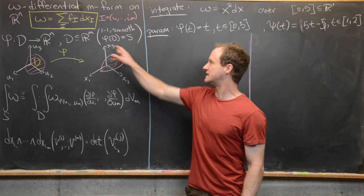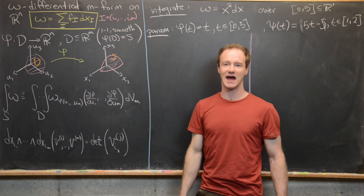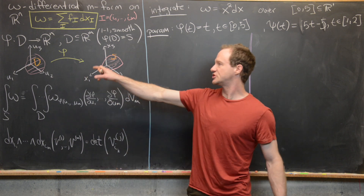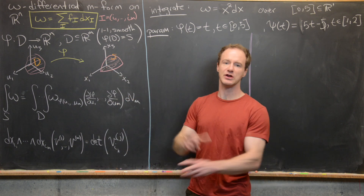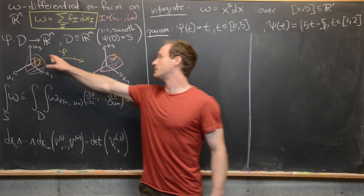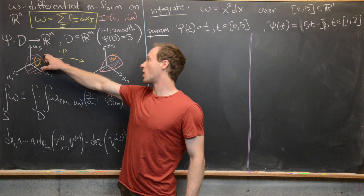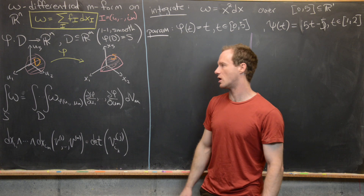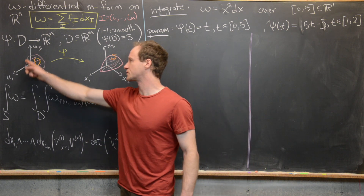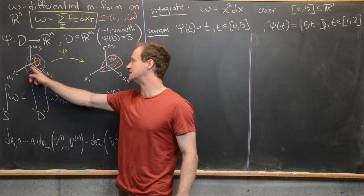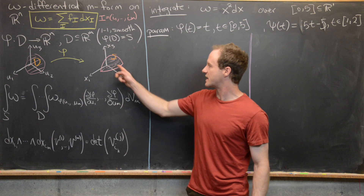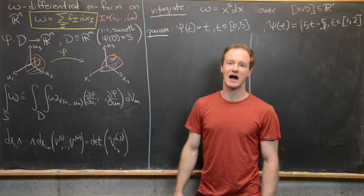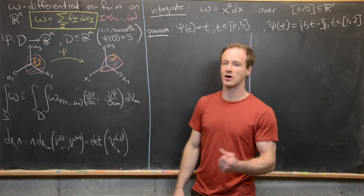It needs to be one-to-one and smooth, and its image is S. So I've drawn a picture here — this is going from R3 to R3, but you can imagine this should really be an arbitrary Rm to an arbitrary Rn. We've got this region D over here being mapped to this region S, an m-dimensional hypersurface in Rn.